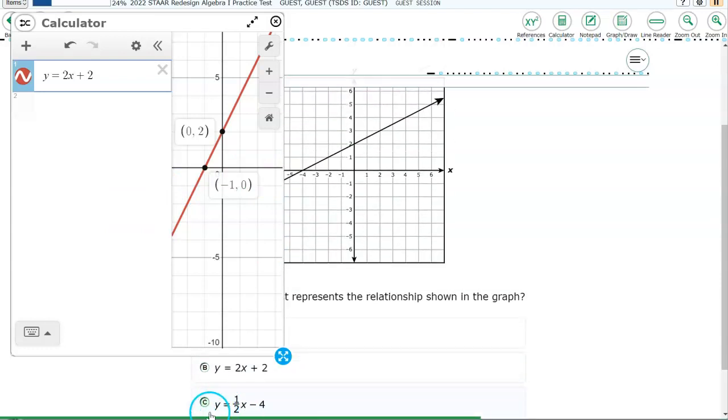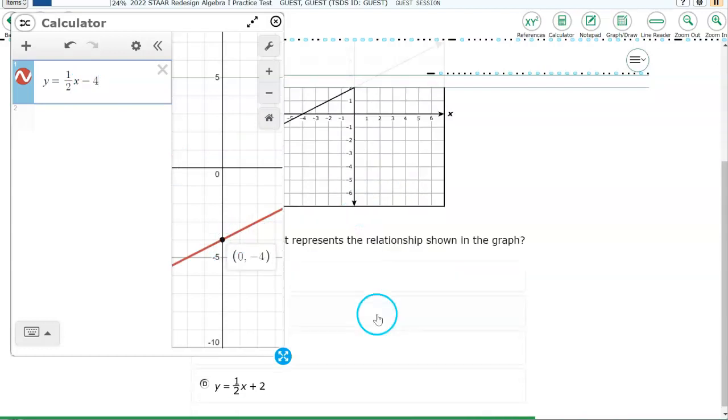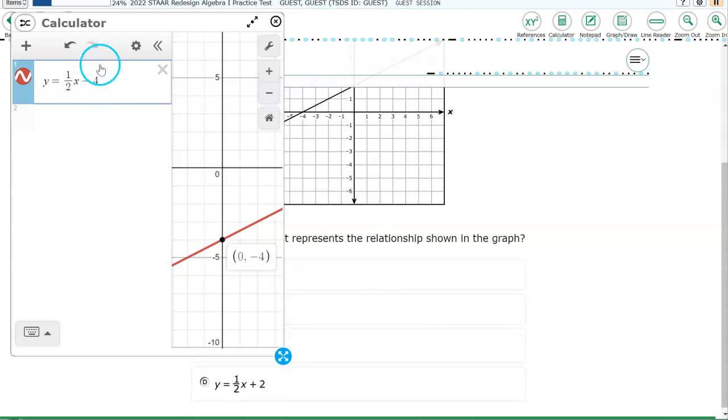Let's look at answer choice C. It's down here. Y is equal to 1 half X minus 4. So I'm going to take out the 2 and put 1 divided by 2. The divide is right next to your shift key. It's the same button where your question mark is. And then I need a minus 4 at the end of this one. So minus 4. All right. This one crosses the Y axis at negative 4 and this one does not. So this is not the correct answer.